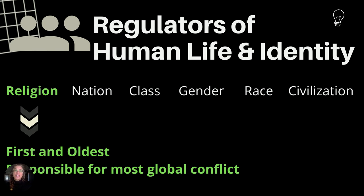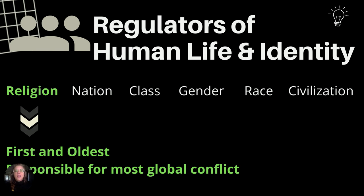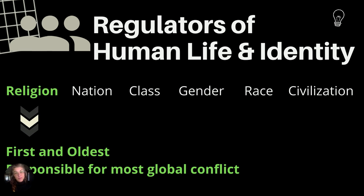The first regulator is religious identity. It is the oldest source of human identity, and it's really one of the best predictors of how we live our lives. This regulator is responsible for most global conflicts historically.